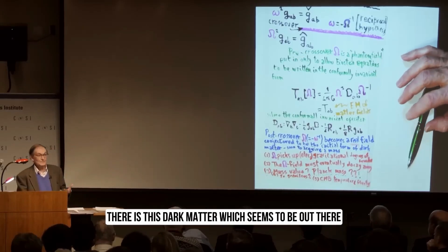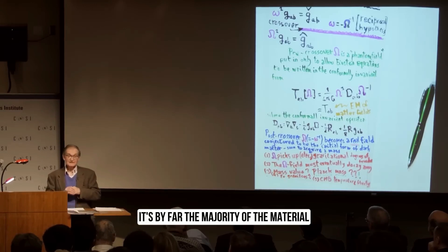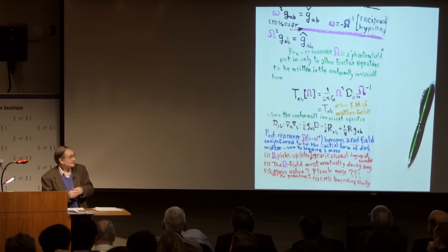There is this dark matter which seems to be out there, which dominates the material of the universe. It's by far the majority of the material substance in the universe. It's called dark matter.